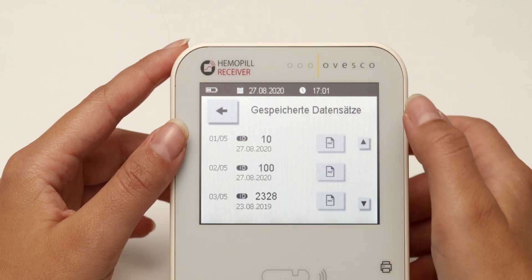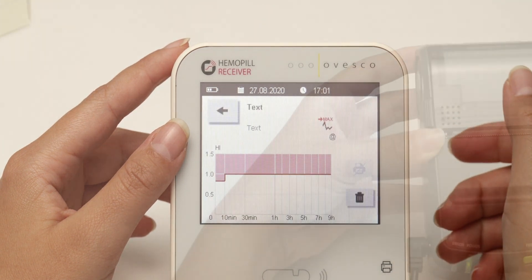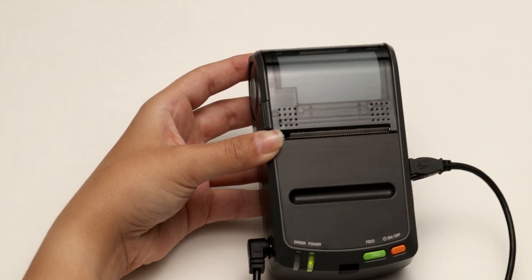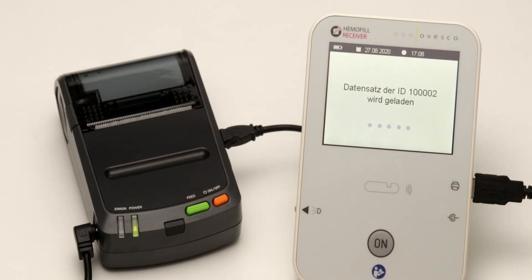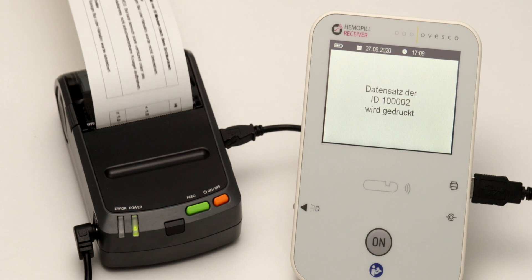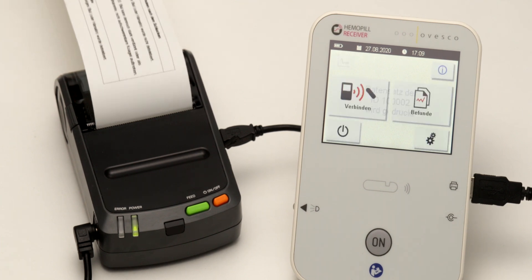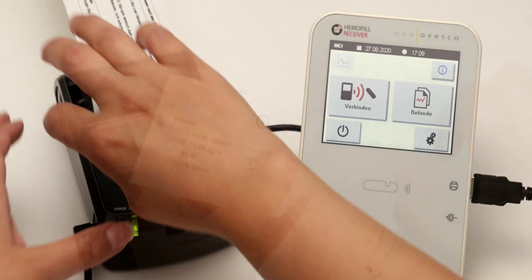All measurements are automatically saved by the receiver. The stored measurements can be viewed under the findings menu and printed out using the connectable thermal printer. The printout contains the most important information of the measurement and can be attached to the patient file.